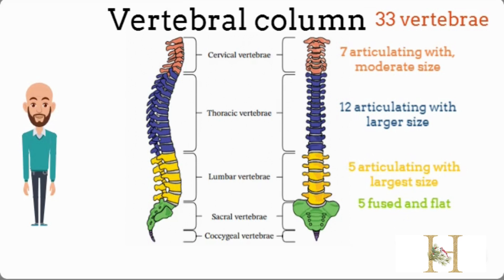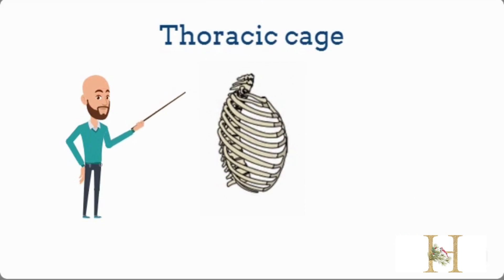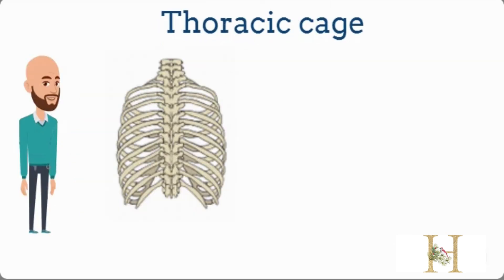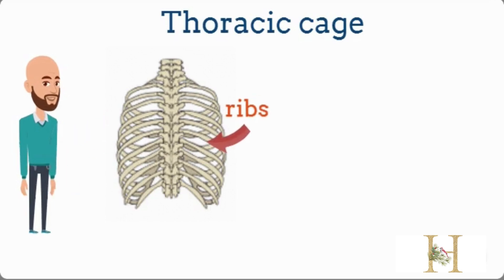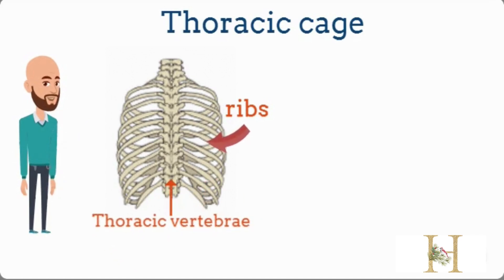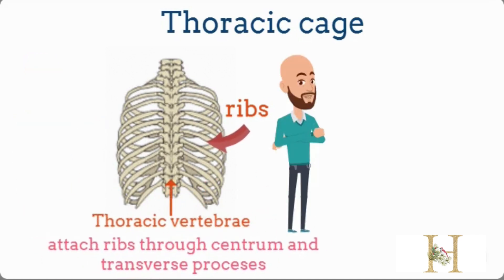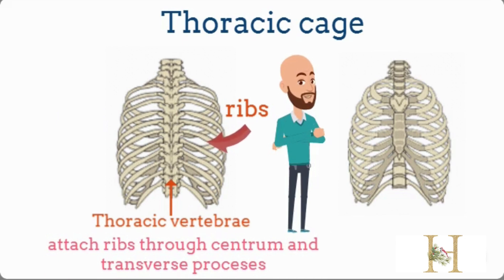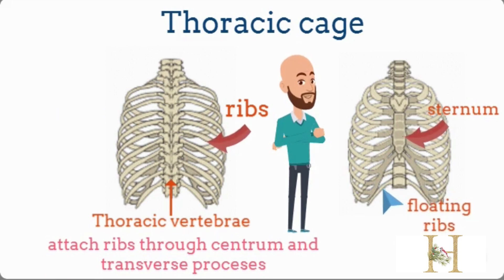Coccygeal vertebrae are fused and small in size. Let's talk about the thoracic cage. The thoracic cage consists of 12 pairs of ribs. These ribs are connected posteriorly with the 12 thoracic vertebrae at the centrum and transverse process of the vertebrae. The first 10 pairs only are connected anteriorly to the sternum, while the last two pairs are short and don't reach the sternum, so they are called floating ribs.